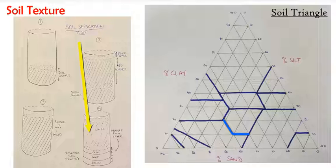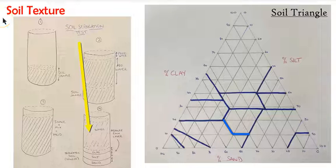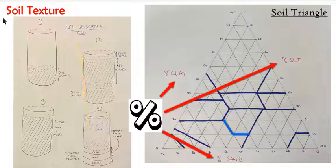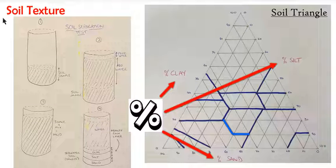The lighter organic materials float to the surface, and you'll have a separation of the heavier sand at the bottom, the medium-sized silt in the middle, and finally a layer of clay at the top. You can measure each layer and calculate the percentage versus the total amount of soil to get your percentages of clay, silt, and sand, which you can use with the three-axis soil triangle.